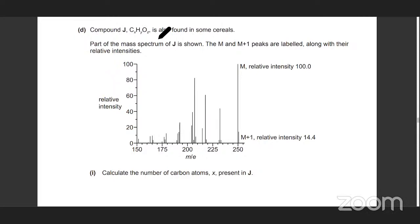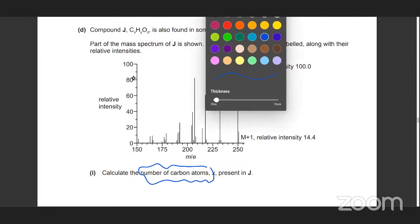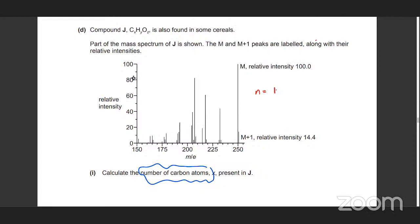This one is about compound J — you probably have to figure out what compound J is. Part of the mass spectrum of J is shown and M and M+1 peaks are labelled along with relative intensities. What you get by just looking at the M/M+1 ratio — you can figure out the number of carbon atoms. There's a simple formula for that: n = (100 / 1.1) × (M+1 height / M height). So it's 100 over 1.1, the M+1 height is given as 14.4, and the M height is given as 100. If you solve this, it's probably going to come out to be about 13.